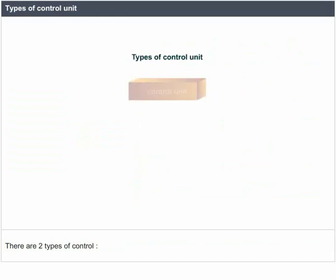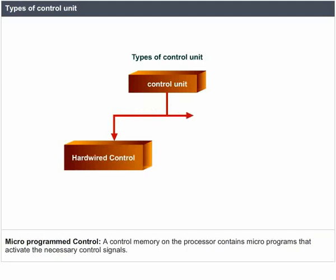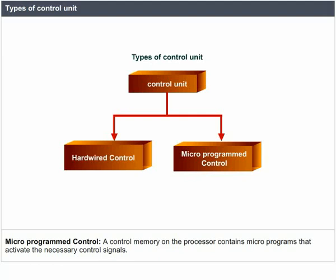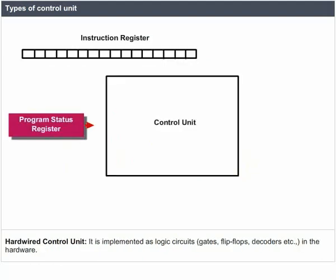There are two types of control unit. Hardwired control: the control unit is made up of sequential and combinational circuits to generate the control signals. Micro-programmed control: a control memory on the processor contains micro-programs that activate the necessary control signals. The hardwired control unit is implemented as logic circuits, gates, flip-flops, decoders, etc. in the hardware.